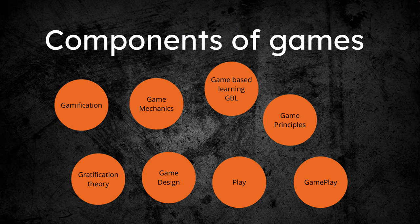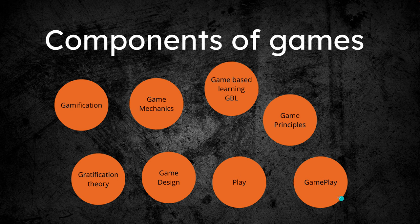So these are the components of games. You have gamification, game mechanics, game-based learning, game principles, gameplay, play, game design, and gratification theory. Now this is all based on research — I've been looking through articles and condensed this into one spot for you to look at. This lecture is introducing you to them; it may not talk about all of them, but at least it's in the back of your head. Some of you have already looked these up in the beginning of our research of this digital citizenship and already kind of know what these are.